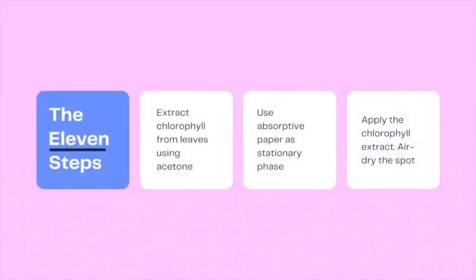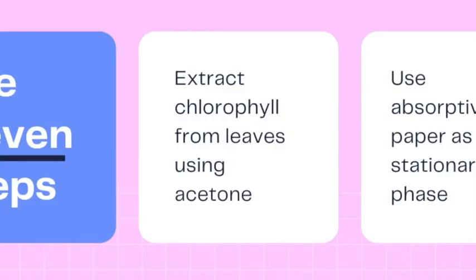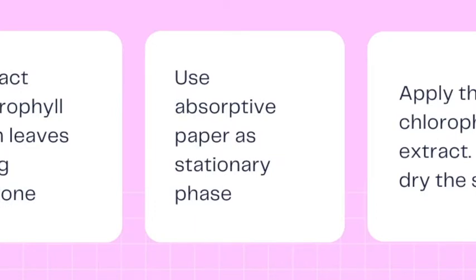Okay, so now I'll be guiding you through the 11 steps needed to separate different color pigments found in the chlorophyll complex in green leaves using paper chromatography. First, the chlorophyll is extracted from leaves using acetone. Second, a strip of absorptive paper is used as a stationary phase.